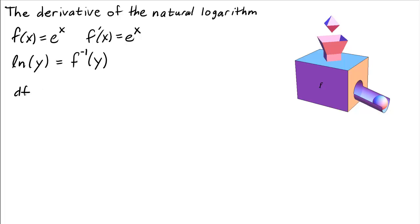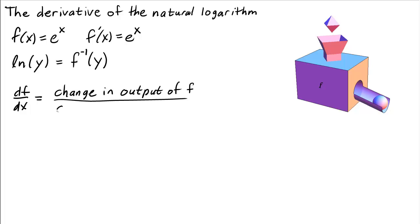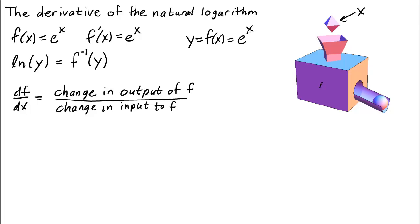Let's think about the derivative of the exponential function, df/dx. One way to think of the derivative is that it's the slope, so we could write it as the change in the output of f over the change in the input. Here's a function machine diagram that could symbolize f. The input to the function machine is x, and if we write y = f(x) = e^x, then the output is y. So we might write the derivative as the change in y over the change in x — and this derivative df/dx, the derivative of the exponential function, is e^x.